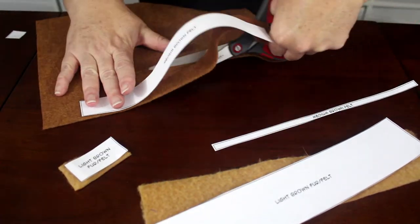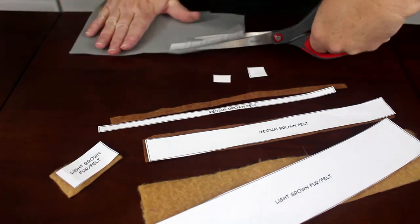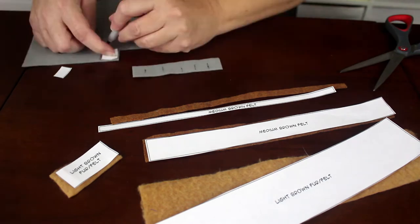Next, cut out two pieces of medium brown felt using the pattern pieces. And finally, cut out the six small pieces of gray felt.